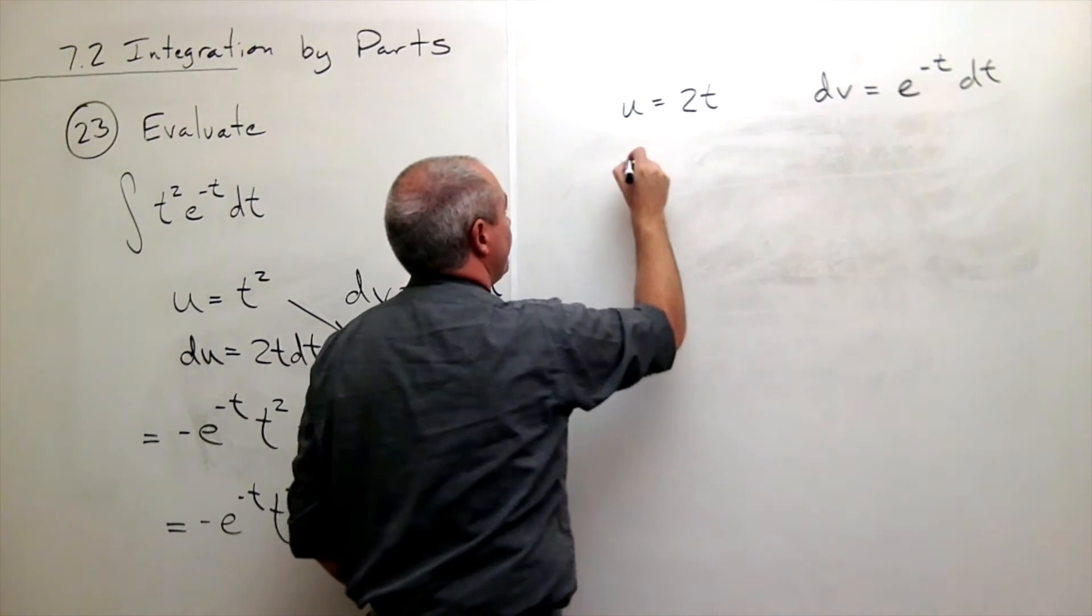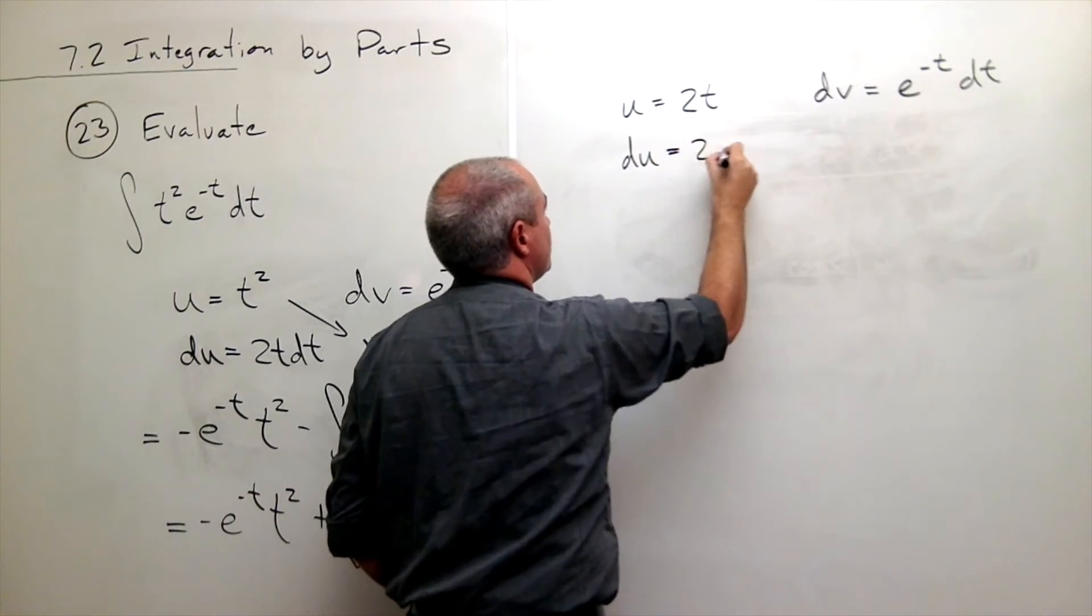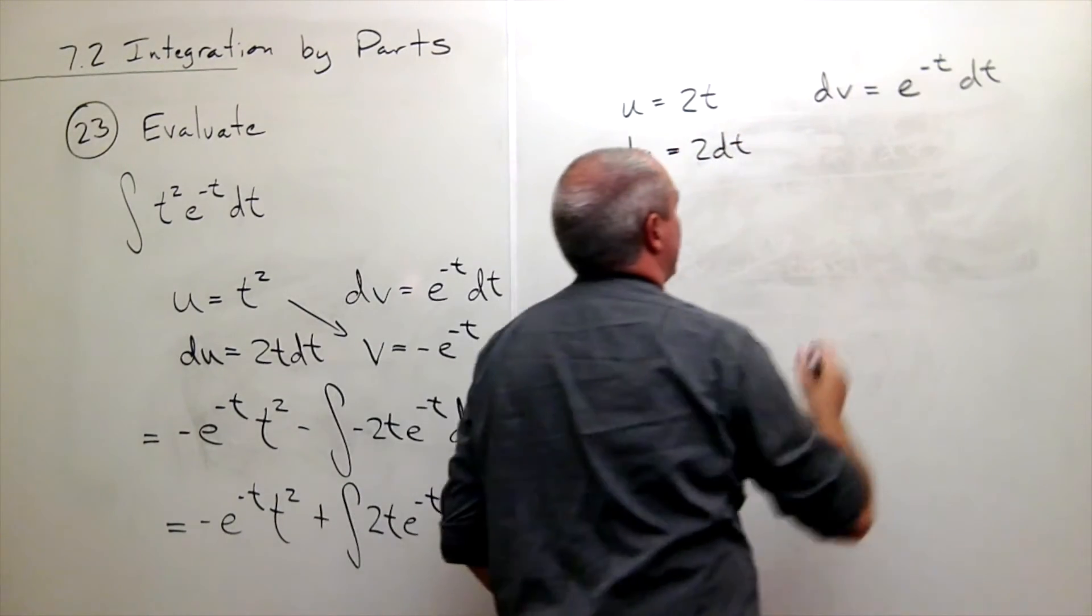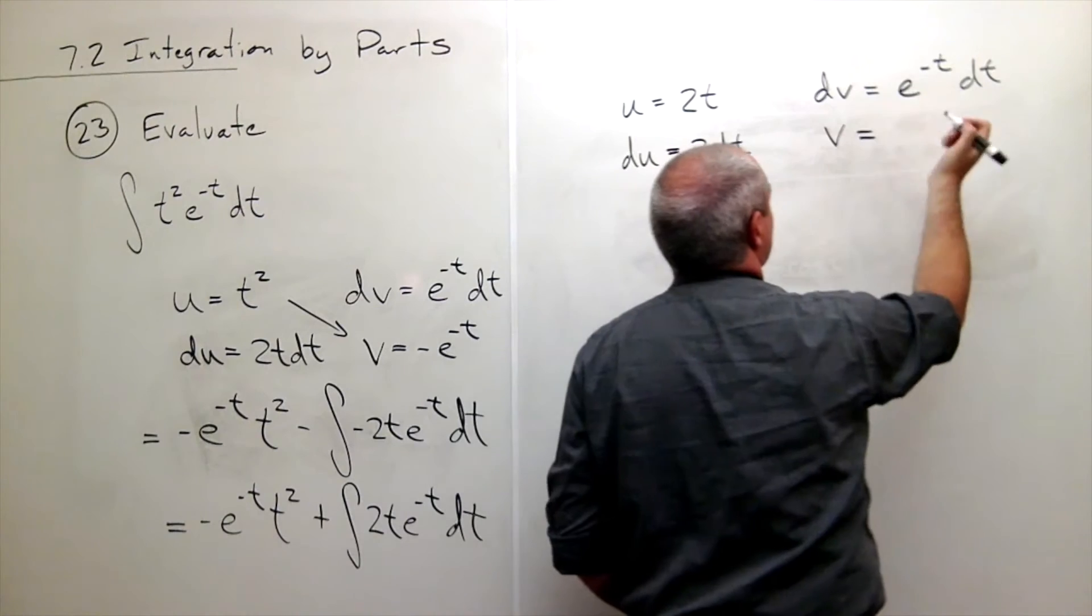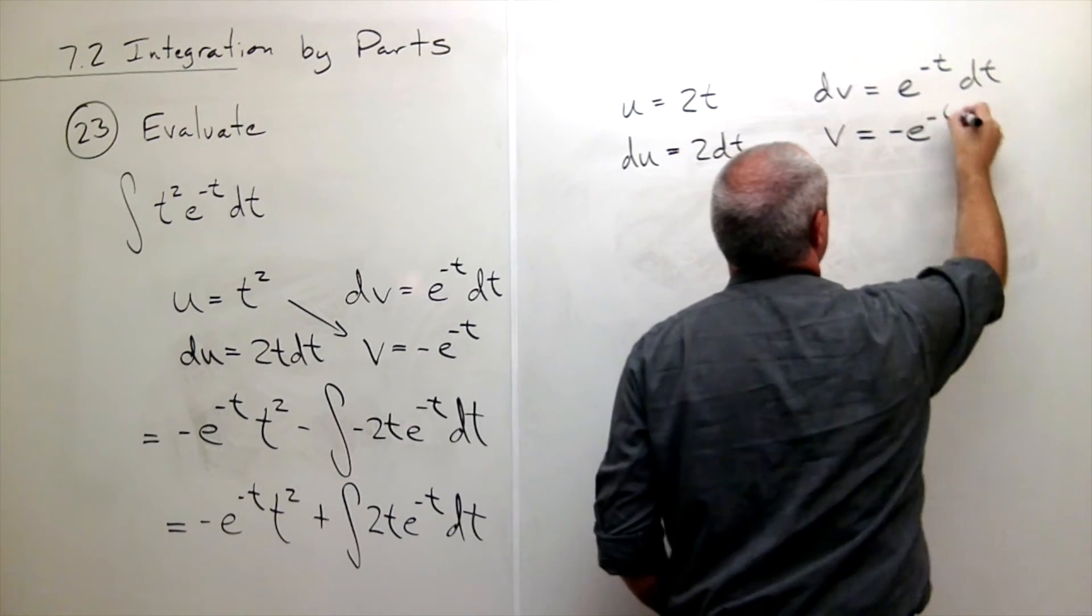So the derivative of u, du is 2 dt and v is equal to negative e to the negative t.